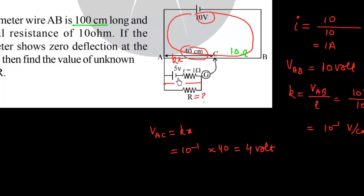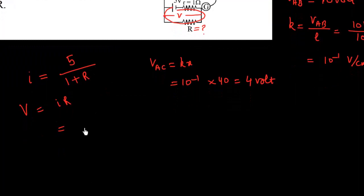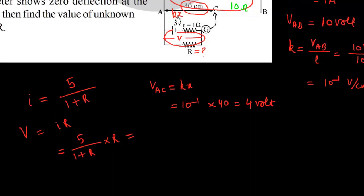The current in the smaller loop will be equal to 5 volt upon 1 ohm internal resistance plus R. The voltage across R is I times R, that is 5 upon 1 plus R, times R. This voltage equals VAC, which is 4 volt.